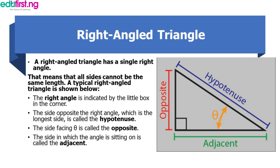We have different types of triangles — we have an equilateral triangle, we have an isosceles triangle, we have a scalene triangle, and the likes. Each triangle has a peculiar characteristic. For this right angle triangle, what makes us know it is a right angle triangle is this little box at the corner.